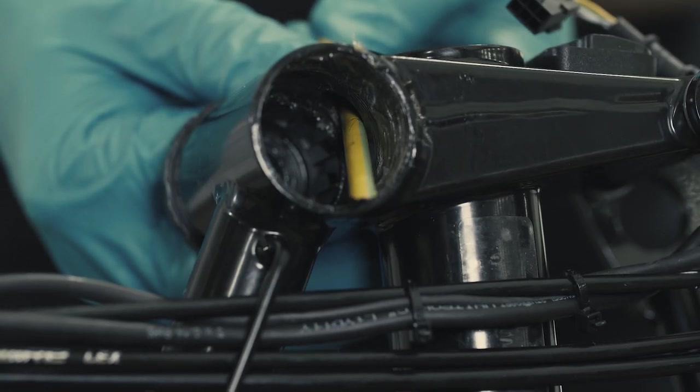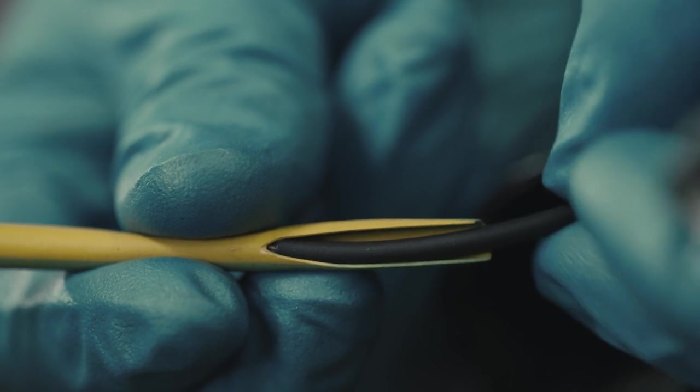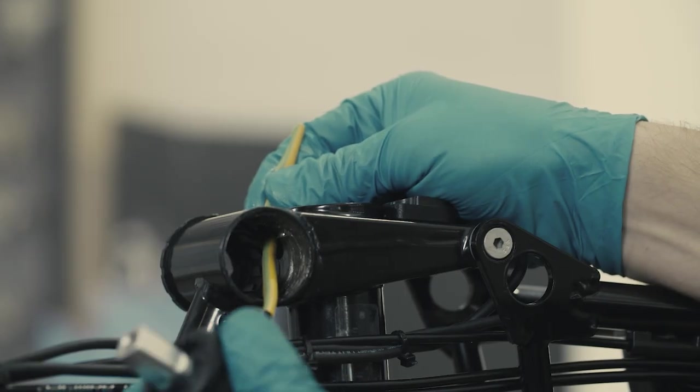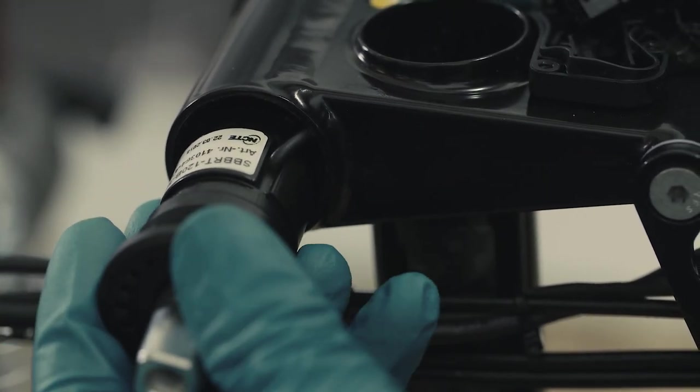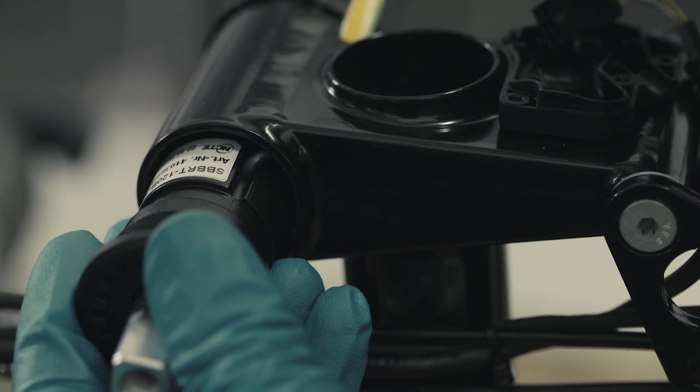Thread the cable and protective sleeve into the bottom bracket shell through the small hose and out through the lower bottom bracket gusset plate. When inserting the drive side bottom bracket, ensure the cable does not get snagged, stretched or damaged in any way.